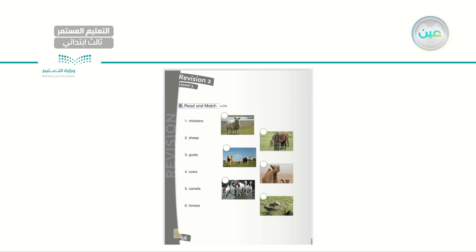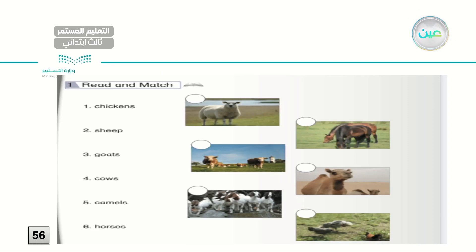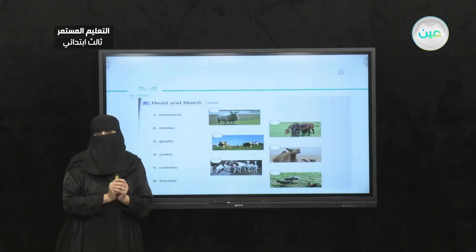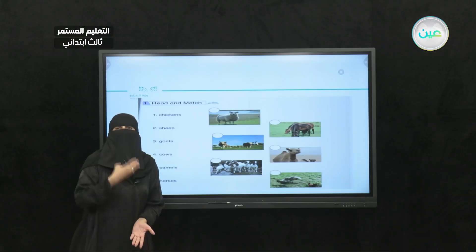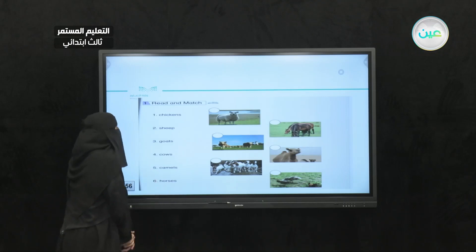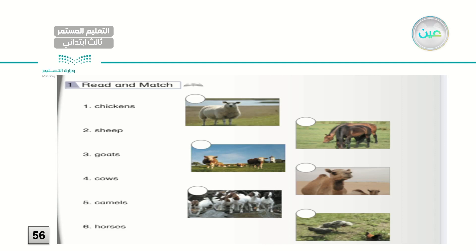Now I need you to open your books at page 56. Have your pencils with you. Read and match — I have six names of animals and six pictures. Let's read: number one — chickens; number two — sheep; number three — goats; number four — cows; number five — camels; number six — horses. I'll be giving you 30 seconds to write the numbers, then I'll be revealing the answers.